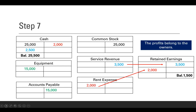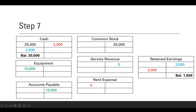Finally, step seven: we're closing. At the end of a month, we have service revenue, but we're going to zero it out because next month we want to record new service revenue. The revenues and expenses get transferred into retained earnings — that's how we get our retained earnings balance. Then our revenue and expense accounts have zero balances so we can start fresh. That also goes for dividends, and there's a separate video on closing.